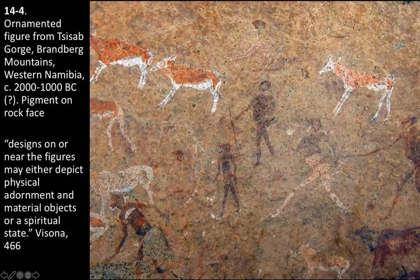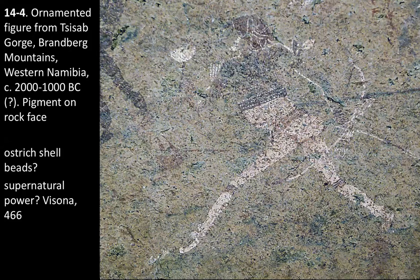Visona says designs on or near the figures may either depict physical adornment and material objects or a spiritual state. When we look at this figure close up, it's usually thought to be a feminine figure, though it's not entirely clear with the details present. The figure is an archer holding a particular type of very delicate bow and arrow that modern San people use, and also has all of these white details.